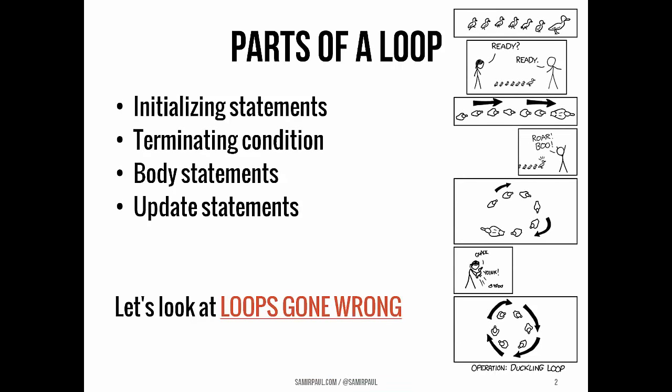Loops typically have four parts. We start usually with initializing statements, which are statements that initialize variables that we're going to use in the loop. We probably have a terminating condition, which is the condition that we test every time we go through the loop, basically to determine if we're going to do another pass afterward.